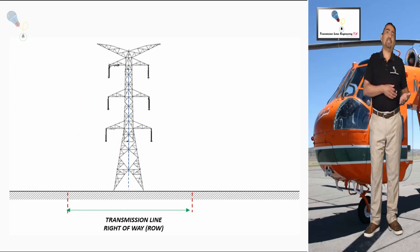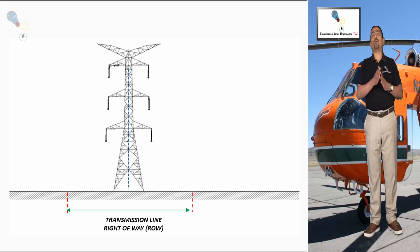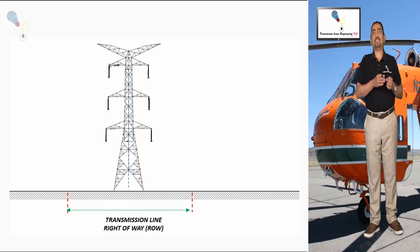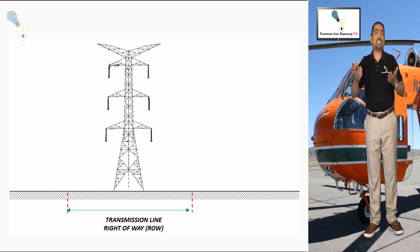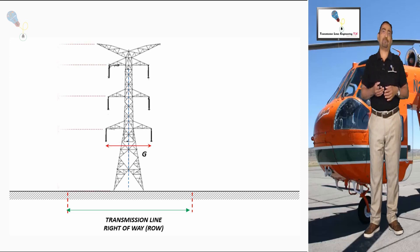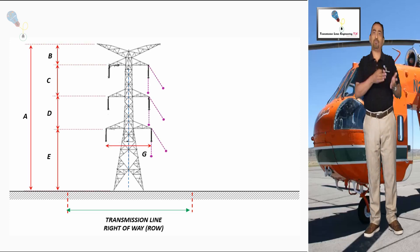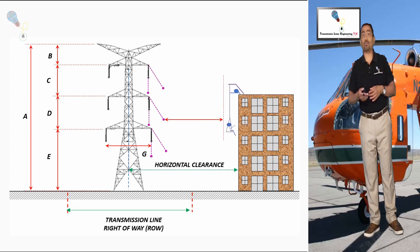It is also necessary to calculate the swing of the cables to obtain the horizontal displacement. However, in addition to this calculation, the horizontal clearances to possible obstacles must be taken into account. Each country and each company owner of transmission lines has this kind of regulation for your reference.